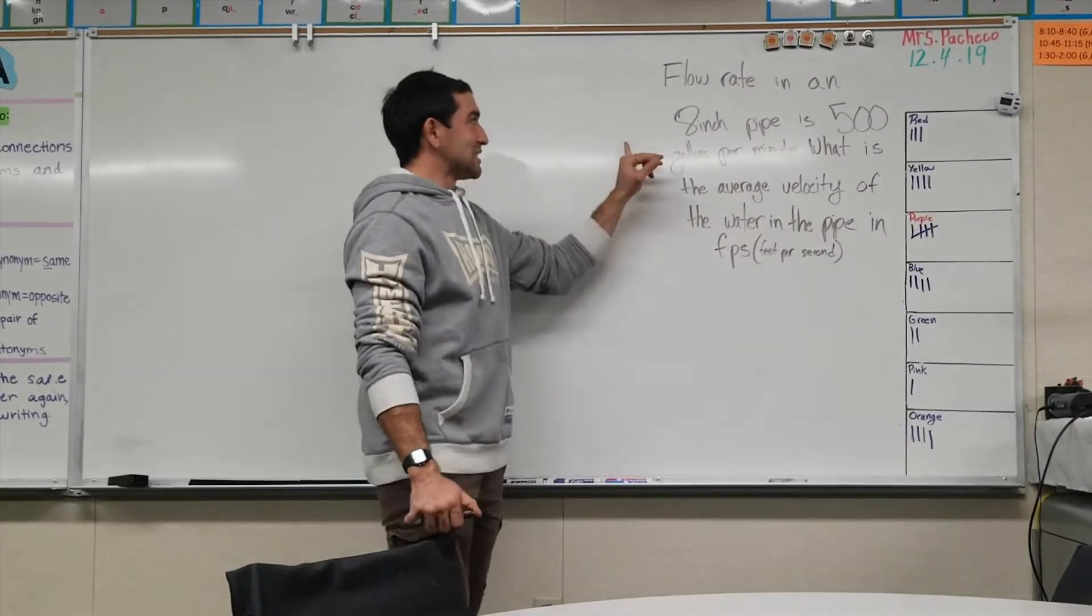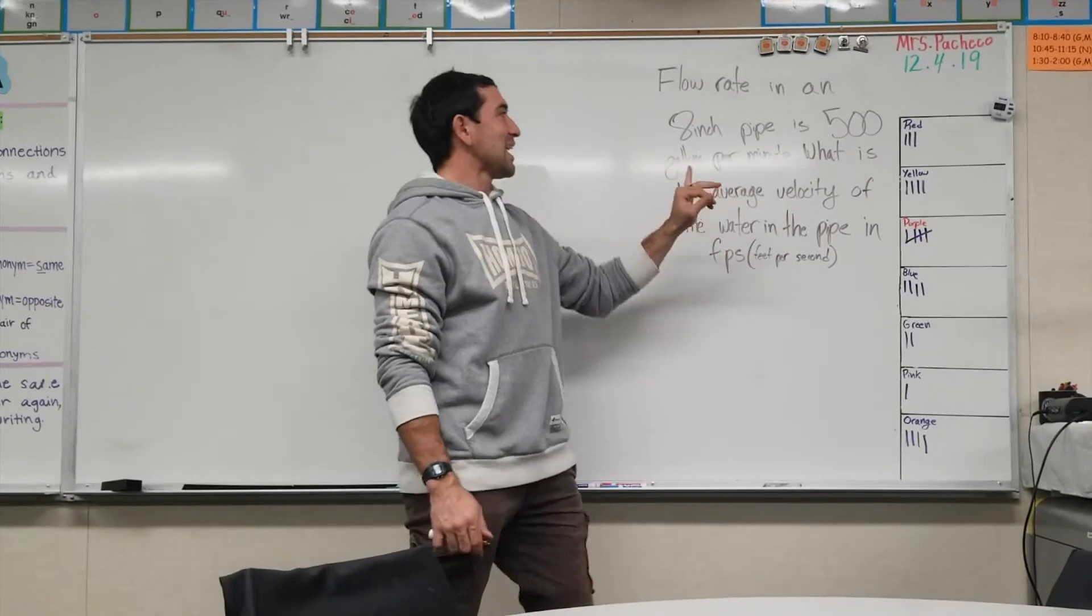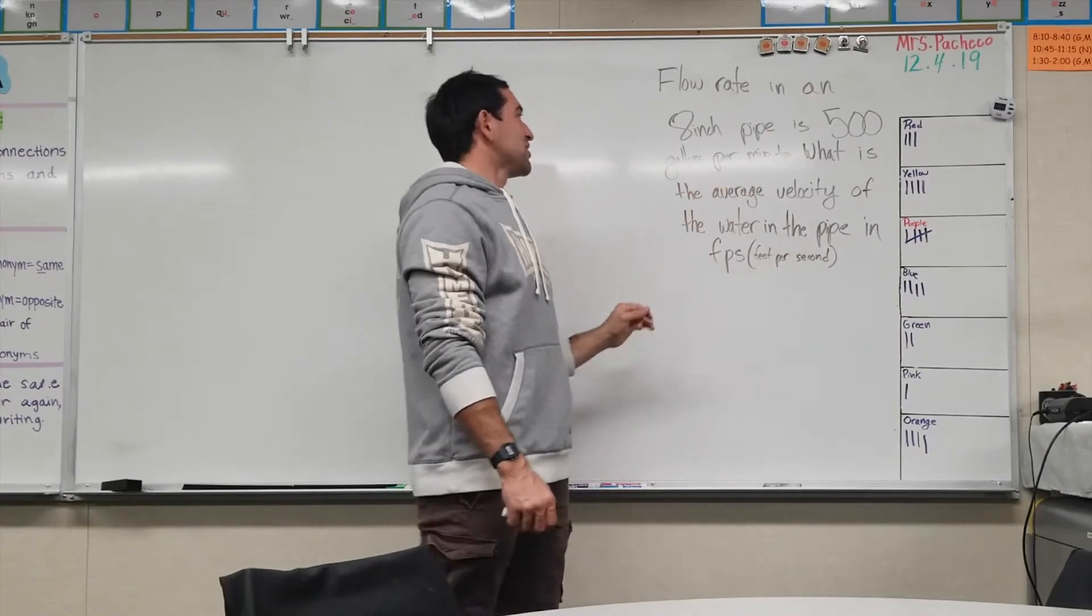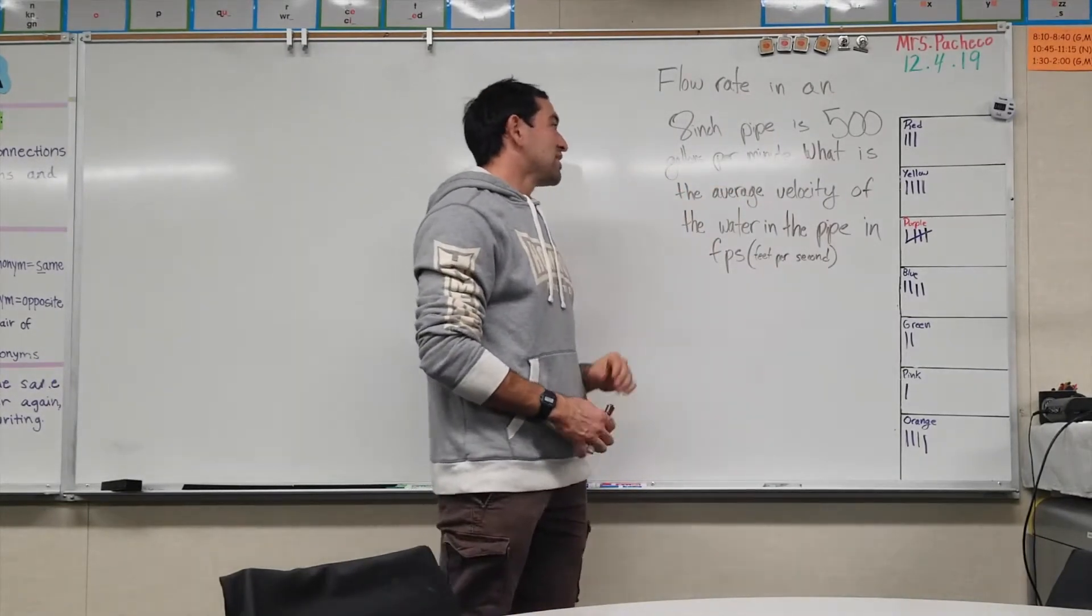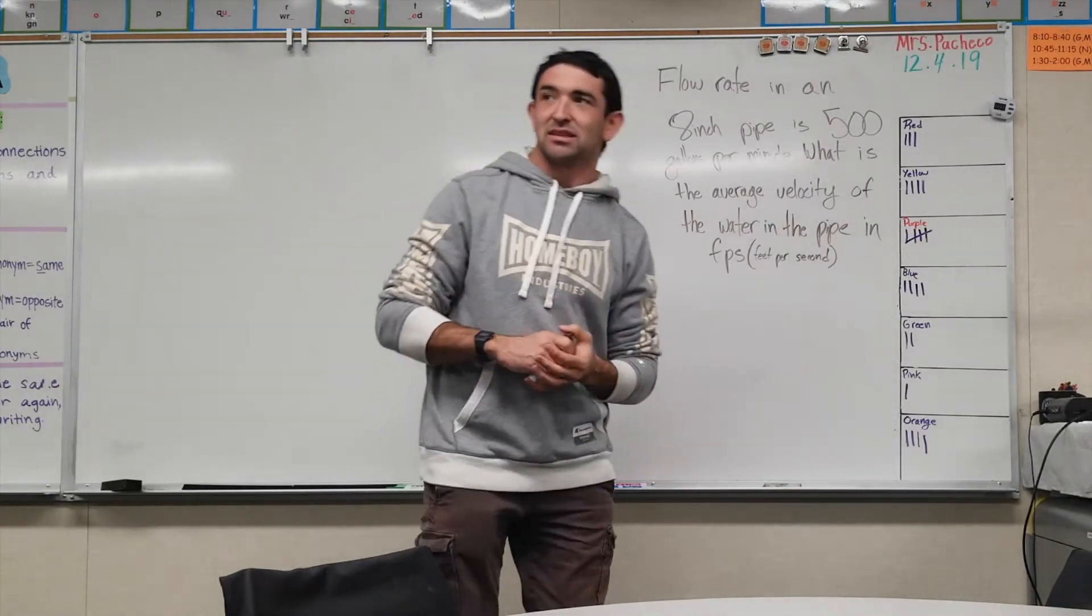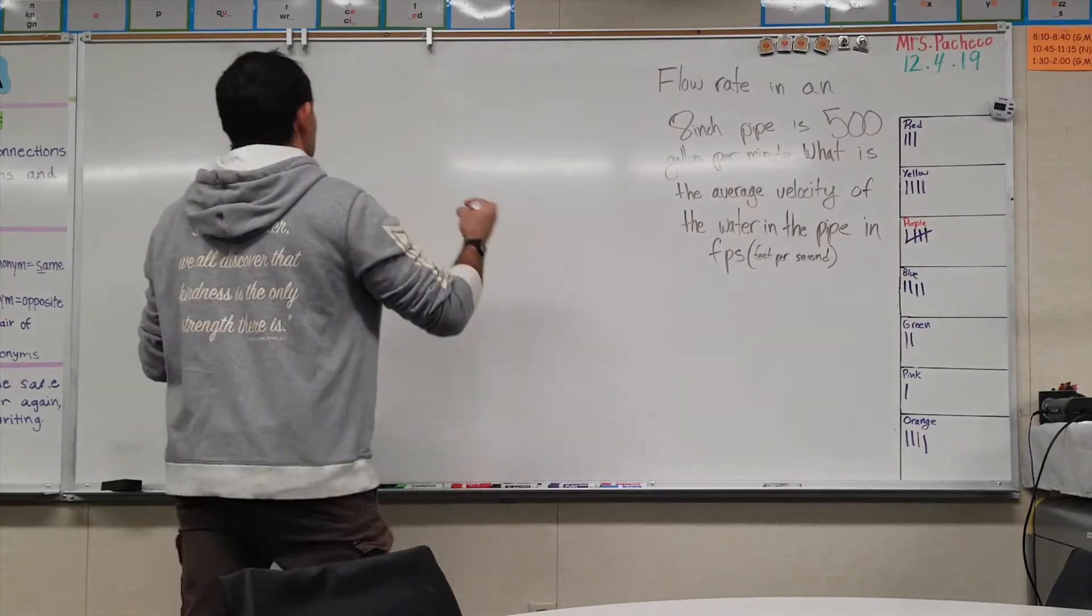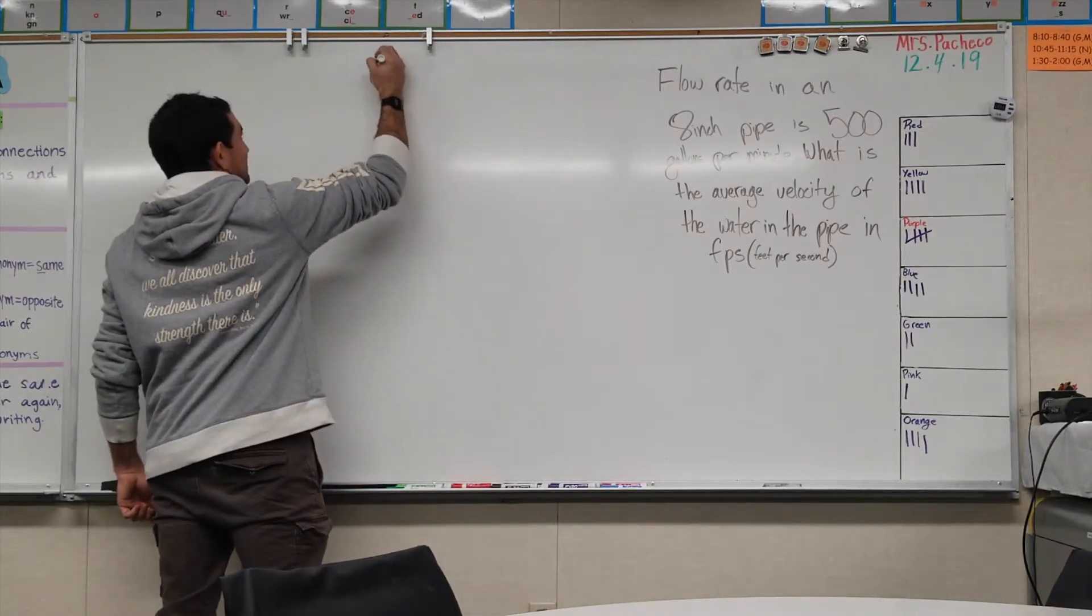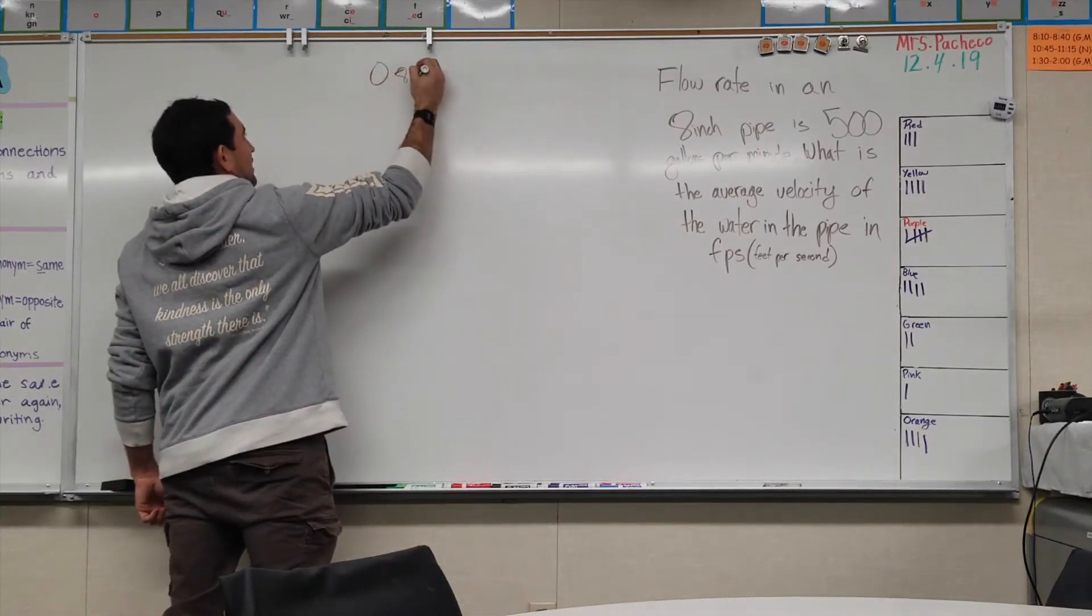The question reads: flow rate in an 8 inch pipe is 500 gallons per minute. What is the average velocity of the water in the pipe in feet per second?